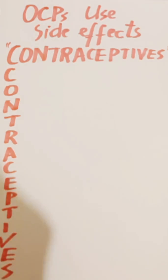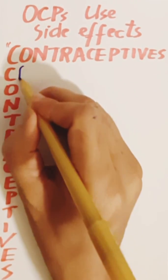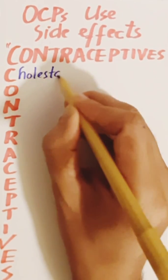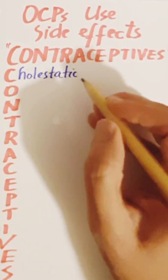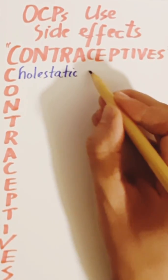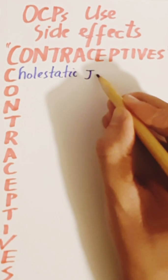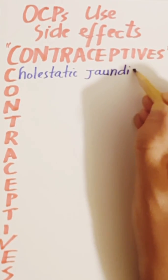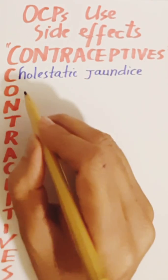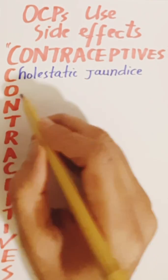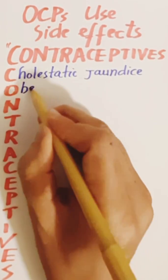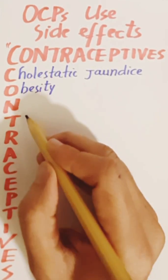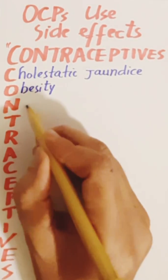C stands for cholestatic jaundice, leading to an increase in conjugated bilirubin because OCPs decrease the motility of the gallbladder. They also lead to obesity, nausea, and vomiting.